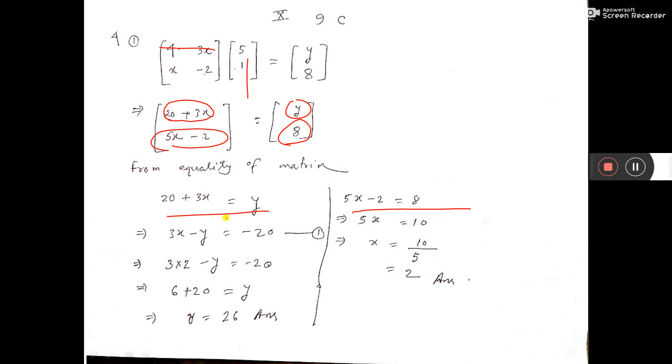Here there are two variables, x and y, and here only one. So do this one first. Take 2 to that side, so 8 plus 2 is 10. Send 5 to that side, 10 by 5 is 2, so x equals 2.